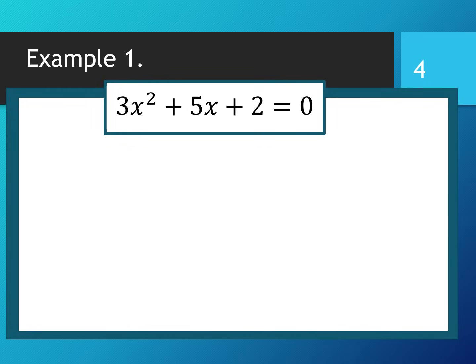The first example. We have to find the solution of the quadratic equation 3x² + 5x + 2 = 0 using the quadratic formula. Step 1: write the coefficients. Coefficient a equals 3, coefficient b equals 5, coefficient c equals 2. Now we have to find the discriminant D.